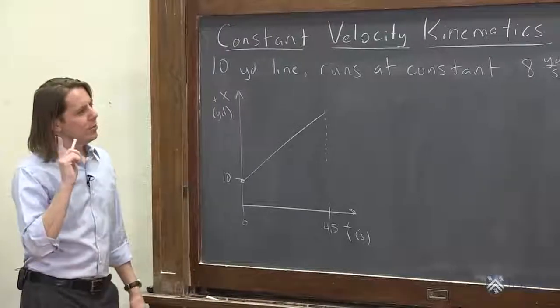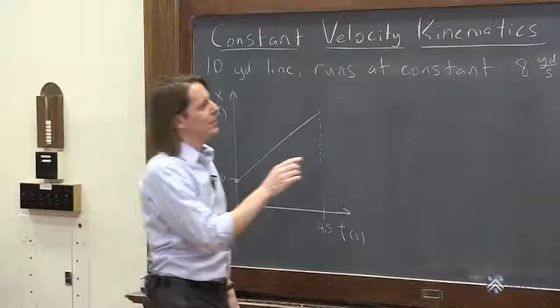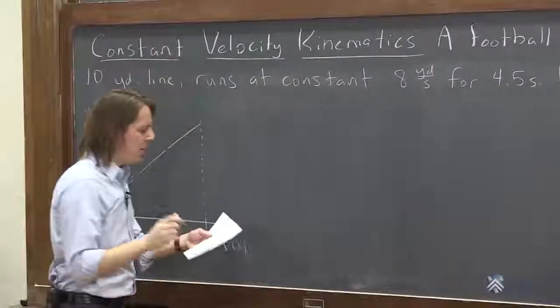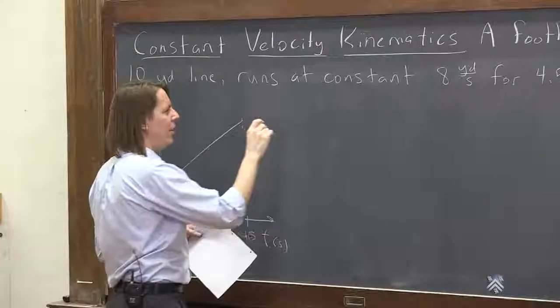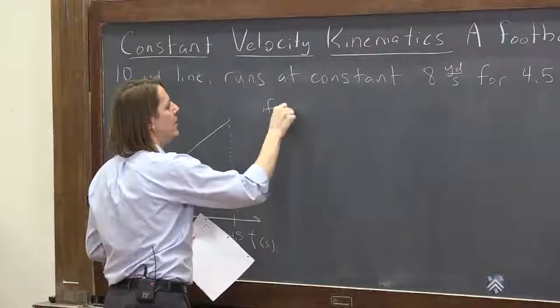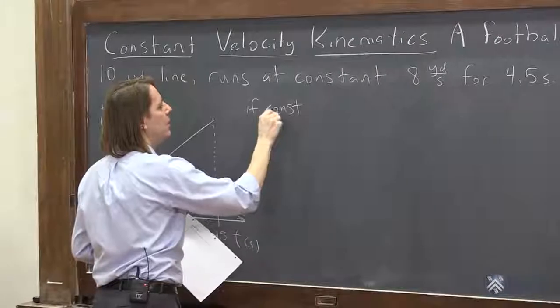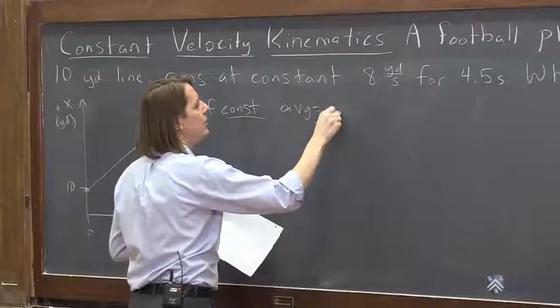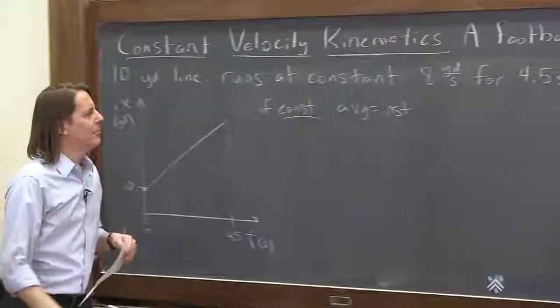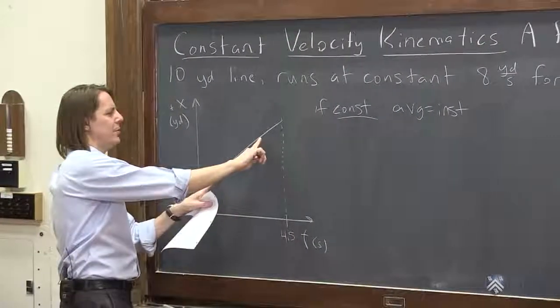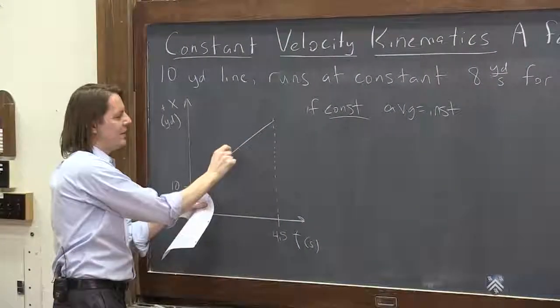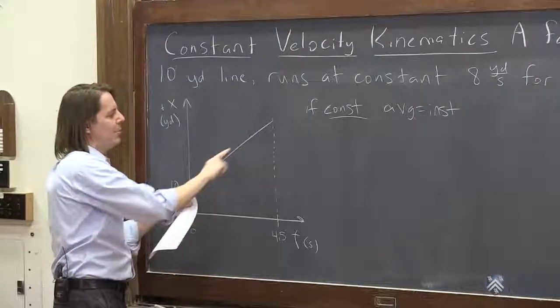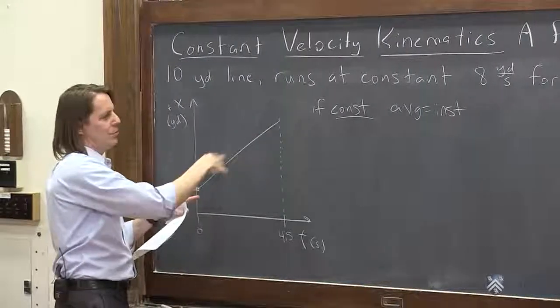So one thing we want to realize, it helps the notation, if we realize or remember that at constant velocity, that the average equals the instantaneous. Remember, average is sort of the average velocity if you consider two points in time. Instantaneous is if you consider an instant in time. But as long as it's uniform and constant, it doesn't really matter. They're equal.